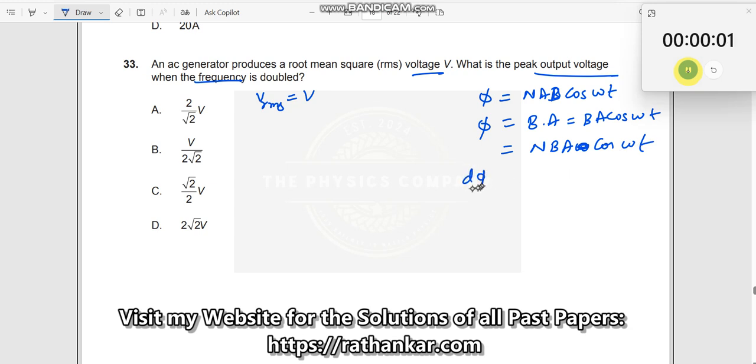Therefore, what is induced EMF? Induced EMF is dφ by dt minus dφ by dt. When I differentiate this one, what do we get here? I get this as minus NBA into minus omega sin omega t, which will now be equal to NAB omega into sin omega t.